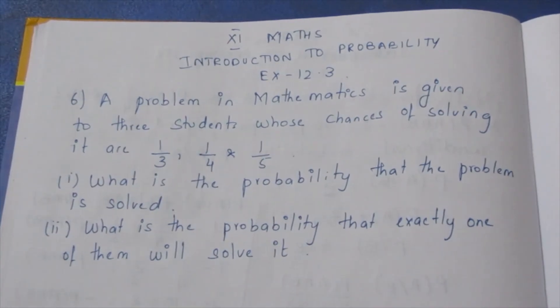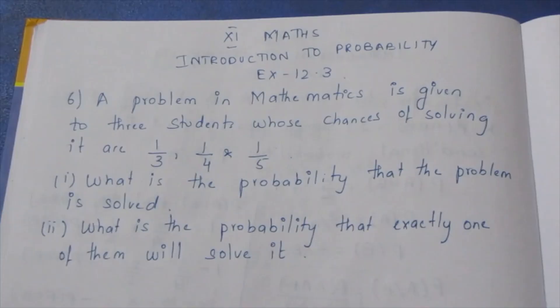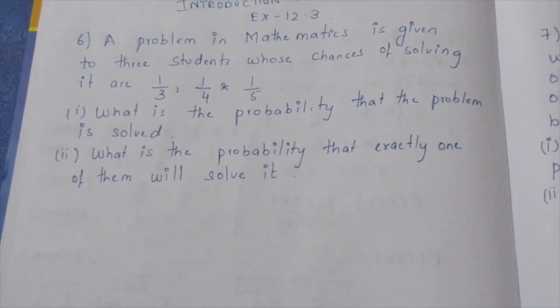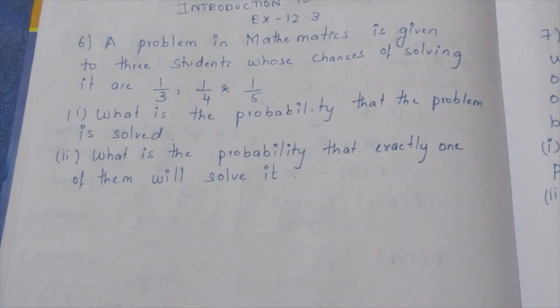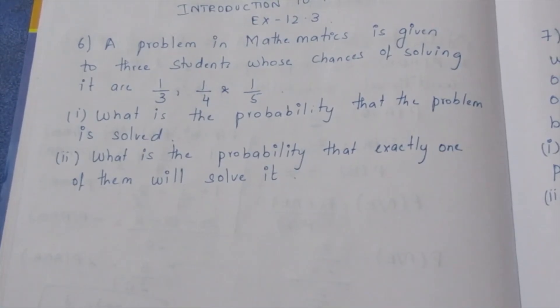Hello viewers, I am Antli. In the 11th Max Introduction to Probability Exercise 12.376, solving the video question. A problem in mathematics is given to 3 students whose chances of solving it are 1 by 3, 1 by 4, and 1 by 5.